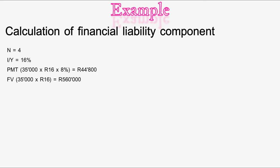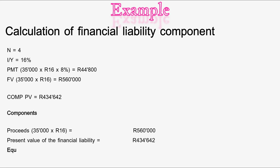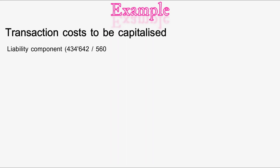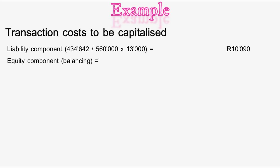Now we work out the components. Proceeds: 35,000 debentures × 16 rand = 560,000 rand. Less the present value of the financial liability of 434,642 rand, giving an equity component of 125,358 rand. For transaction costs: the liability component is (434,642 ÷ 560,000) × 13,000 = 10,090 rand. The balancing equity component of transaction costs is 2,910 rand (total 13,000 rand).